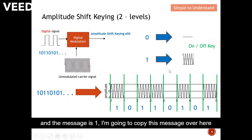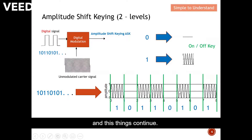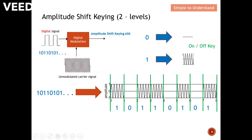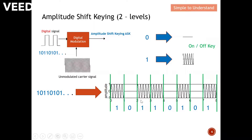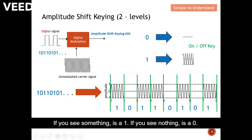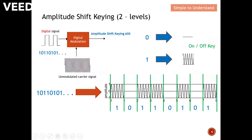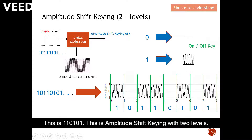The message continues in this way. When you look at the waveform you can distinguish your message — if you see something it's a one, if you see nothing it's a zero. So you can read: 1, 1, 0, 1, 0, 1. This is amplitude shift keying with two levels.